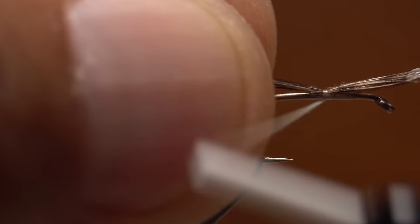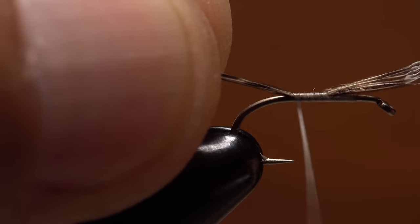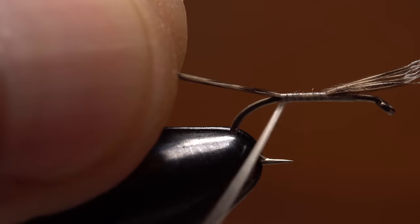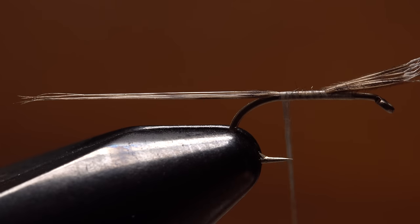Using a pinch wrap, secure the fibers to the top of the shank and continue taking touching thread wraps all the way to the start of the hook bend. Once the fibers are secured, use your tying scissors to snip the excess butt ends off close.